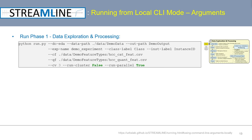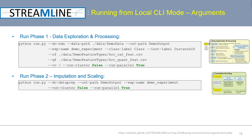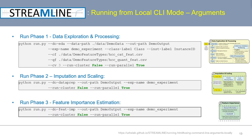To run the second phase — imputation and scaling — use the doDataPrep flag to indicate phase 2. Again, specify the output path and experiment name so Streamline can build off previously saved outputs and run parameter settings already specified, then set runCluster and runParallel. To run the third phase — feature importance estimation — use the doFeatImp flag. Again, specify the four key parameters: outputPath, experimentName, runCluster, and runParallel.